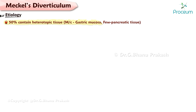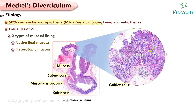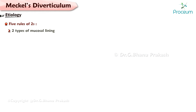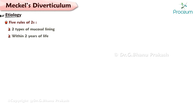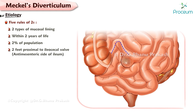For exam purposes, it is good to know the five rules of twos. Two types of mucosal lining: (1) native ileal mucosa, and (2) heterotopic mucosa — most commonly acid-producing gastric mucosa at 60%; other types include pancreatic, colonic, and duodenal mucosa. Within two years of life. 2% of the population. Two feet proximal to the ileocecal valve on the anti-mesenteric side of the ileum. 2 inches long.